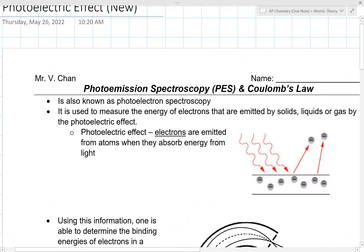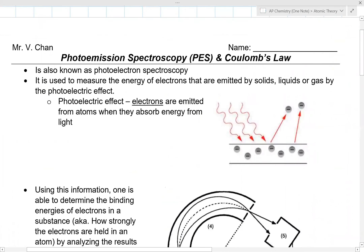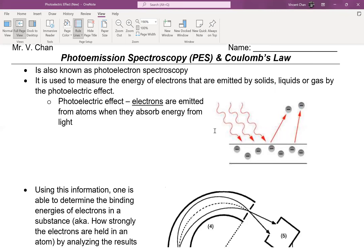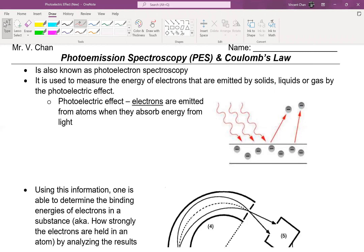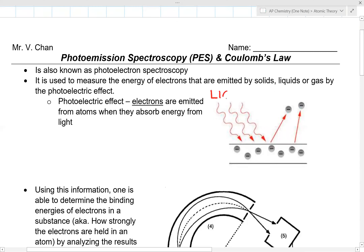Photo emission spectroscopy is used to measure the energy of electrons emitted by solids, liquids, or gases through the photoelectric effect. The photoelectric effect is when electrons are emitted from atoms when they absorb a certain amount of energy from light. If we emit light onto the surface of an element, you get a discharge of electrons.